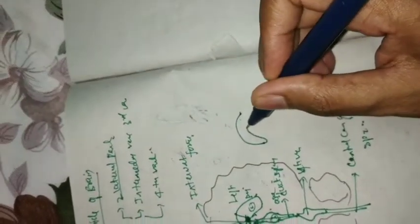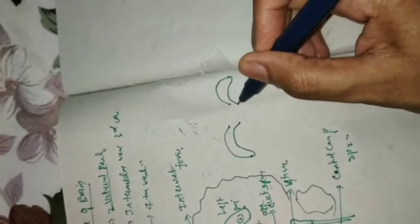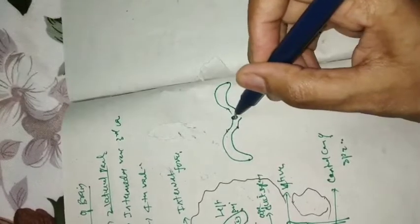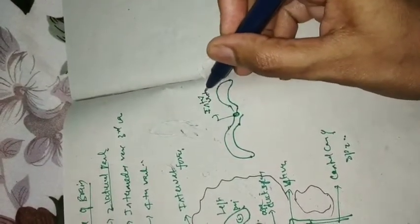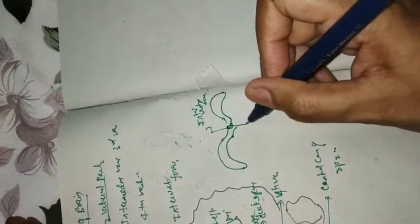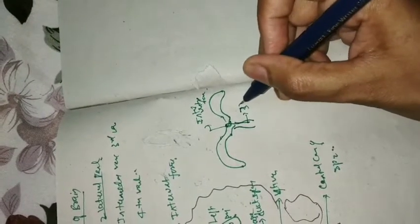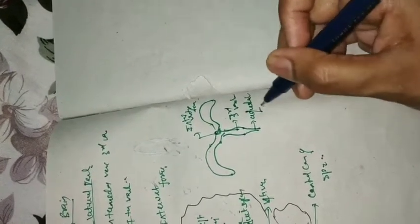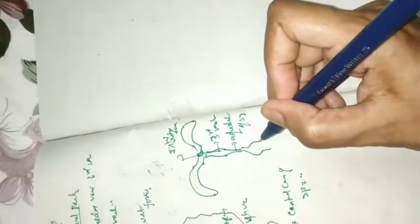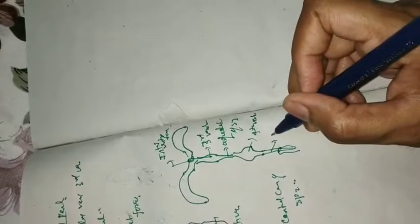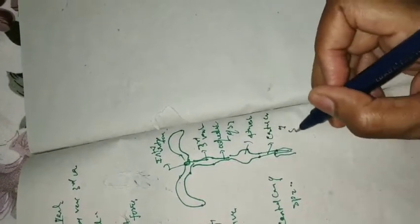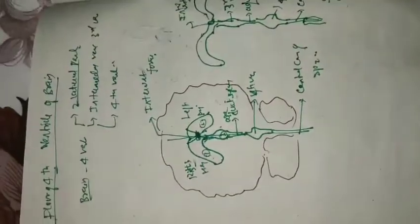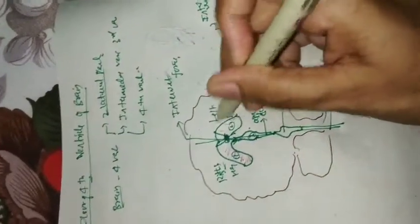So if I show you clearly here: this is your right ventricle, this is your left ventricle. Here you will have the third ventricle, which continues as the aqueduct of Sylvius, then the fourth ventricle, and this ends in the central canal of the spinal cord. So this whole thing is your ventricle area.